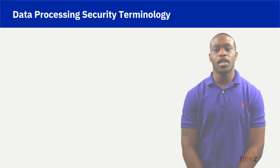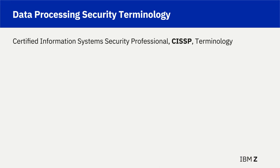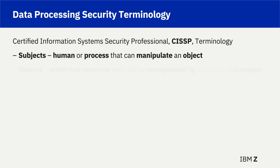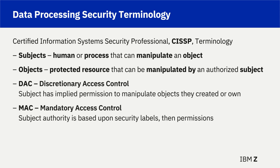Generally accepted terminology for a system security professional includes the use of subjects, objects, DAC, and MAC. The relationship between subjects and objects are fundamental to maintaining data security. Subjects can be granted or denied the ability to manipulate an object, where objects are protected resources. Discretionary access control, or DAC, and mandatory access control, also known as MAC, are security rules where MAC is a higher level of security because MAC does not make an assumption that a subject has permission to an object that the subject has created.